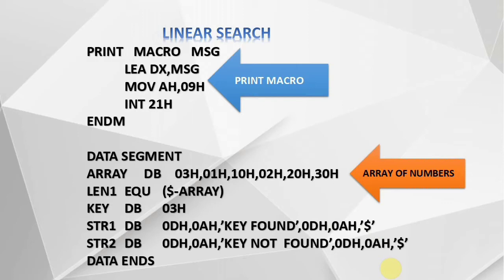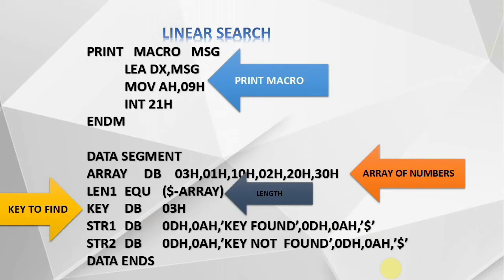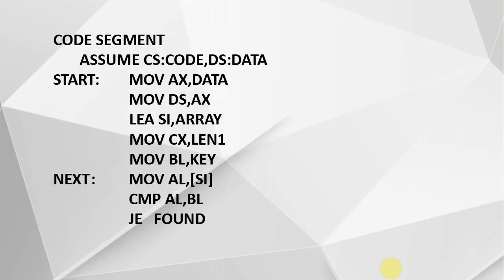The array contains elements: 03H, 01H, 10H, 22H, 20H, 30H. The length of the array is calculated using the formula 'dollar minus array', stored as constant len1. The element to search for is 03H, which is present in the array, so it should print 'key found'. Two strings are declared: string1 is 'key found' and string2 is 'key not found'. This ends the data segment.